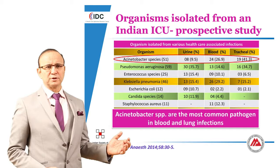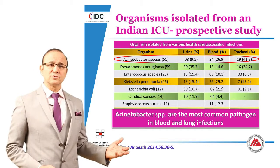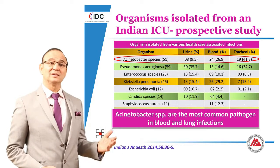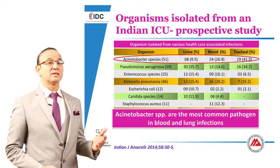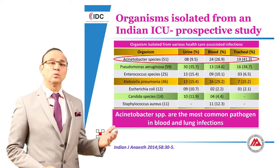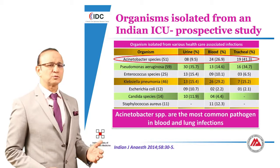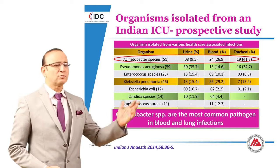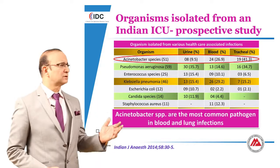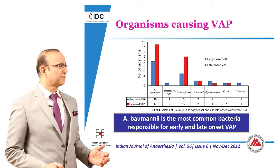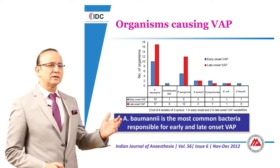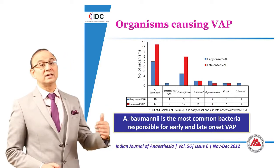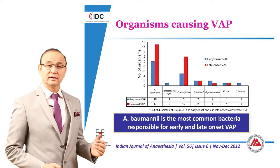Studies published from our country have shown that multi-drug resistant and XDR organisms are prevalent in ICUs and have spread all over India. One study published in the Indian Journal of Anaesthesia showed that Acinetobacter species were the most common pathogen isolated from blood and lung infections, and also the most common bacteria isolated from both early and late onset ventilator-associated pneumonia.